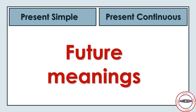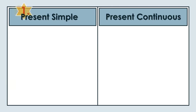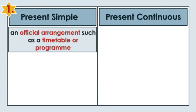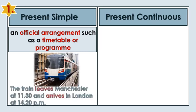Future meanings. The Present Simple is used when we talk about official arrangements, such as a timetable or program. The train leaves Manchester at 11:30 and arrives in London at 2:20 PM.